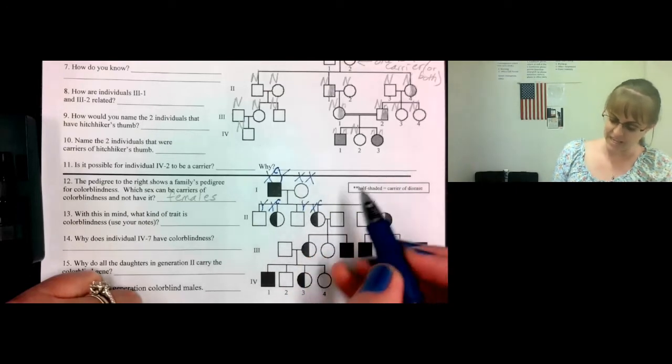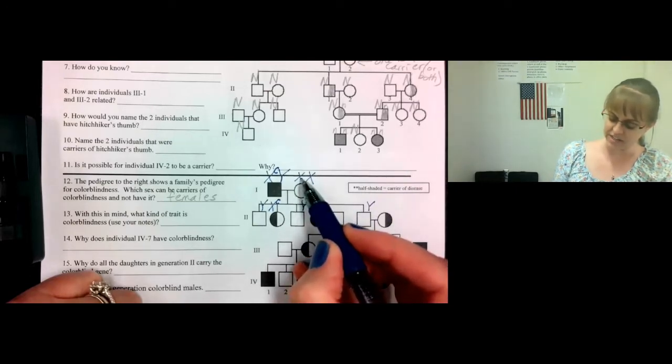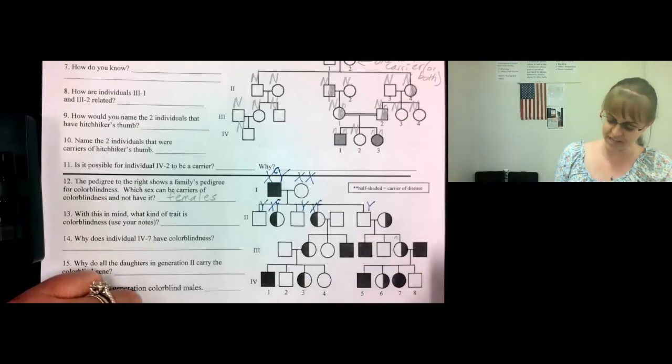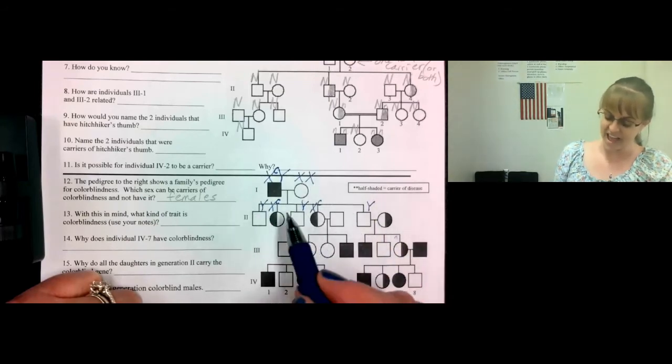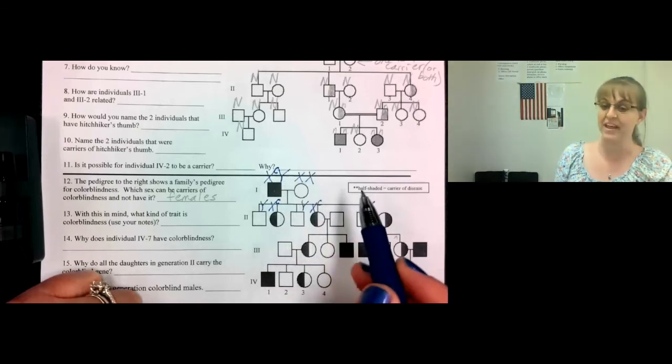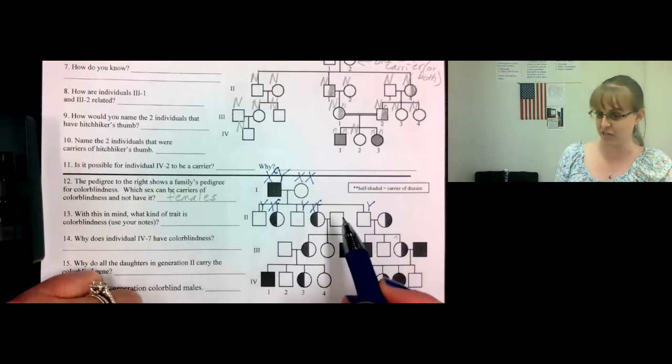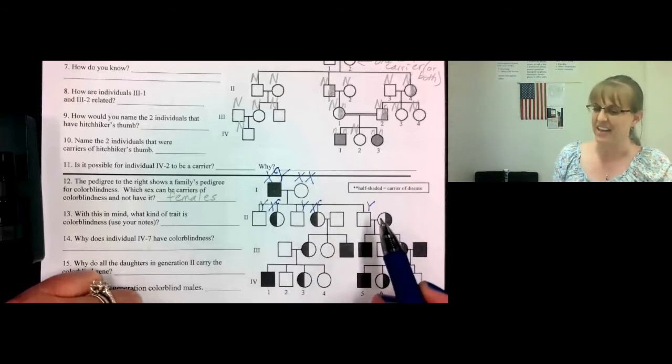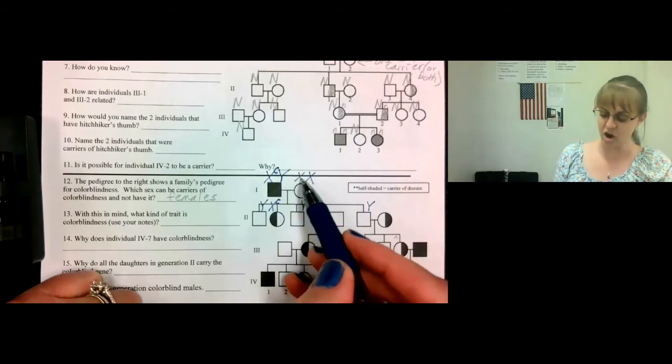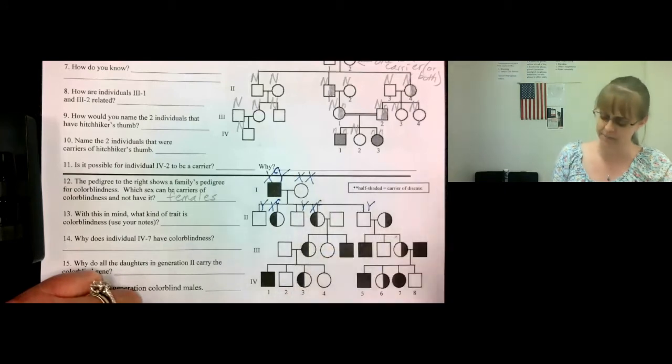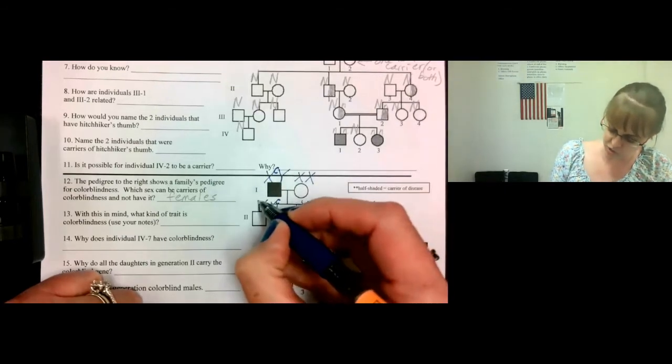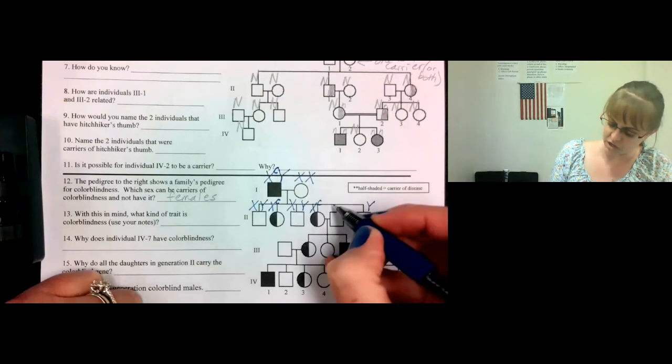Now, the mom either passed on a normal X or a not-so-normal X. Well, considering all of her sons are fine, none of them have the condition. And all of her daughters are carriers from the dad, but they do not have colorblindness. And with five kids, it's very likely that both of hers are regular Xs. We don't know for sure, but we have a pretty good chance. So let's just assume that these are all normal, plain Xs that she passed on to her daughters and sons.